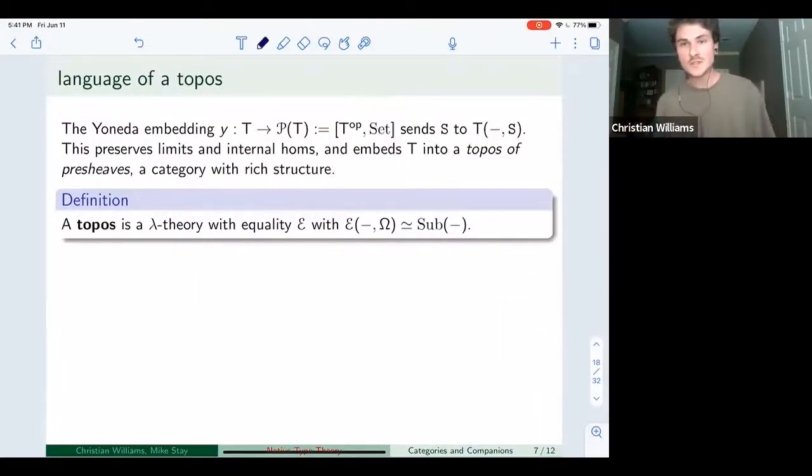So given such a language, we can embed it into a presheaf topos using the Yoneda embedding, one of the most important constructions in all category theory. So in our case, it would send a sort to essentially the index set of all terms of that sort or all programs of that sort. And you could picture that as like the giant tree of all operations into a certain sort. And essentially what native type theory does is that it just provides a language to carve out sub trees of this. This embedding preserves the limits and internal homs, the structure that we need to define our kind of higher order theories and embeds into a very rich category.